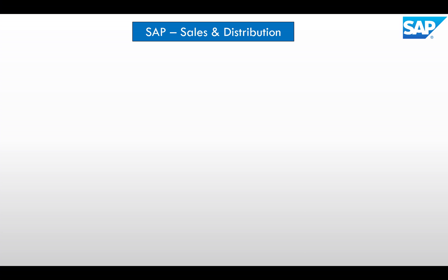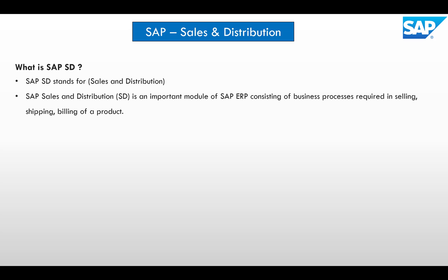In this video we will be understanding the basic background of SAP Sales and Distribution. SAP SD stands for Sales and Distribution, where we handle the entire sales process and distribution process of an organization. SAP Sales and Distribution is an important module of SAP ERP consisting of business processes required in selling, shipping, and billing of a product.